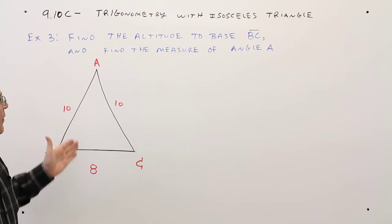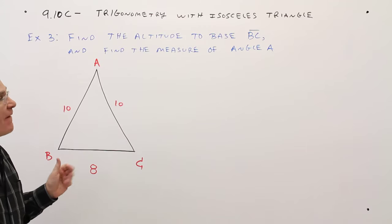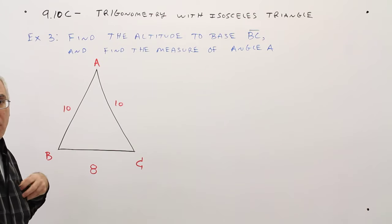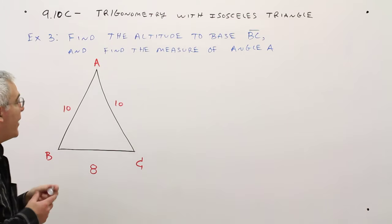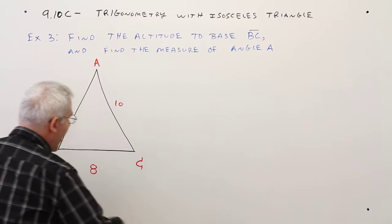Find the altitude to base BC, and then find the measure of angle A in this triangle. So for the altitude, first what we'll do is we'll draw it.